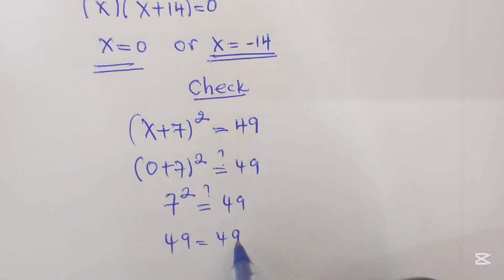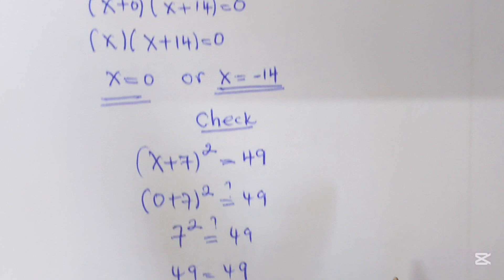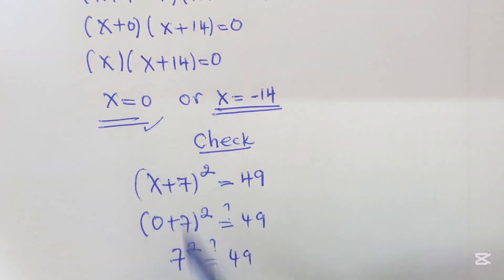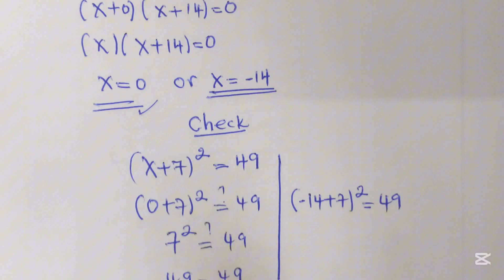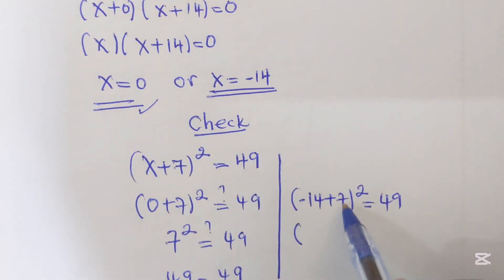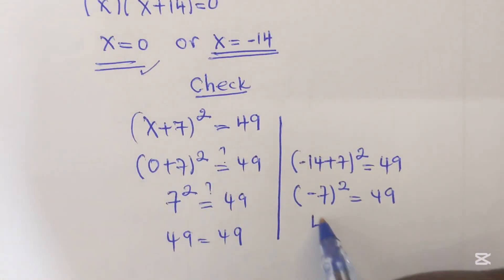The first value is correct. On the other hand, we shall replace with -14: (-14+7)² = 49. So -14+7 = -7, then (-7)² = 49, and 49 = 49.